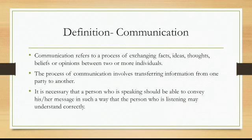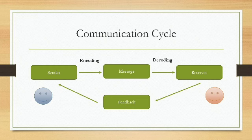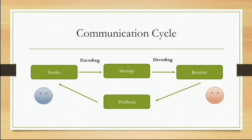It is necessary that a person who is speaking should be able to convey his message in such a way that the person who is listening may understand it correctly. Let us move to the communication cycle. In this diagram, there is a sender who is sending a message to a receiver. The sender encodes a message, meaning he is framing the message, and then the receiver decodes it so that the receiver understands it.